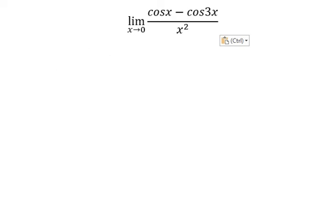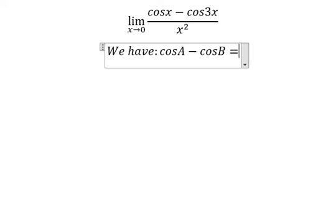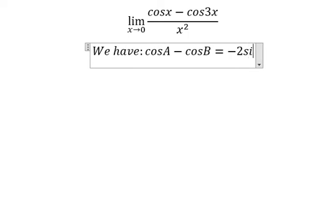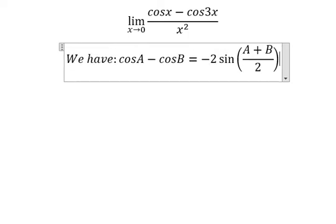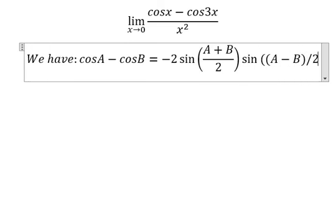We have the formula in here that's about cosine A minus cosine B equals negative 2 sine of (A plus B) over 2 times sine of (A minus B) over 2.